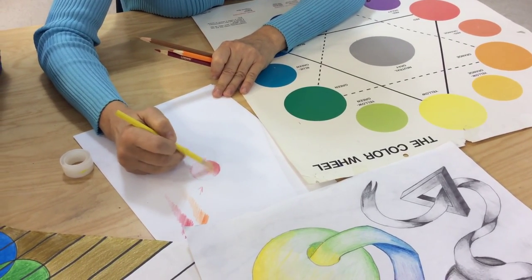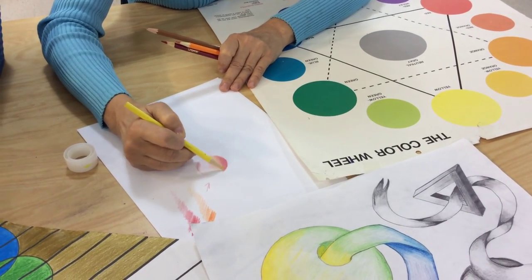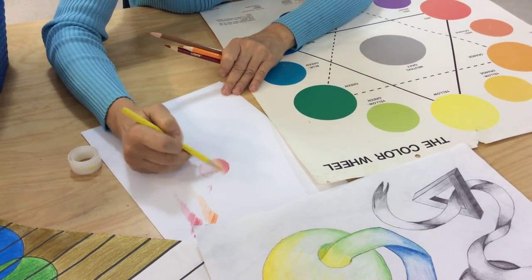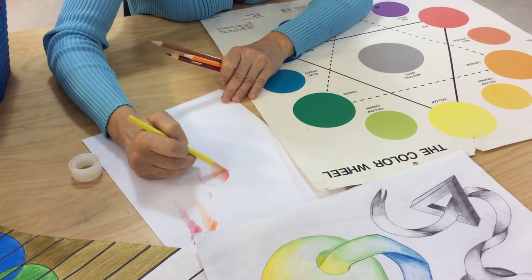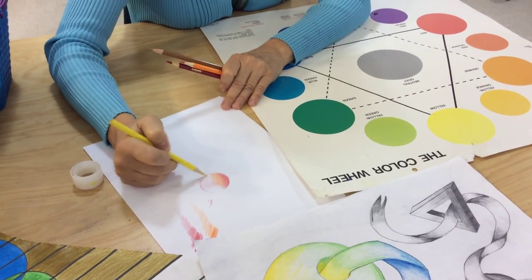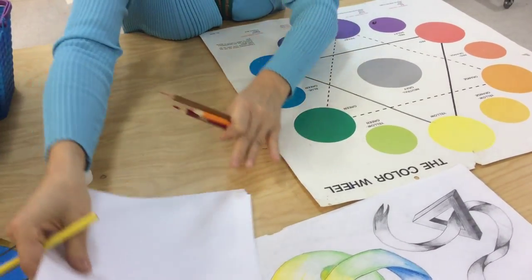By layering colored pencils on top of each other, I'm creating a depth that I can't get with one color. I'm creating value, and it has a painterly look. This is really more appealing as opposed to just one solid color.